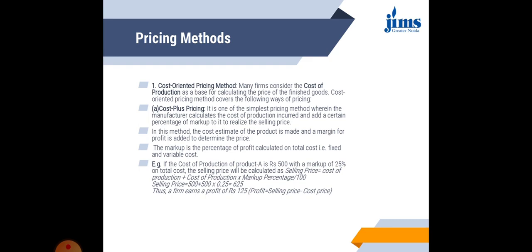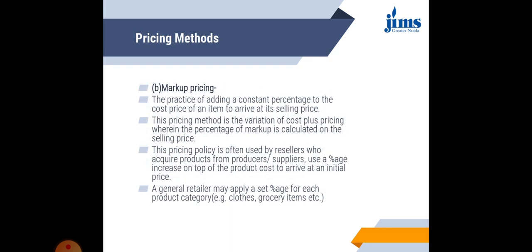For example, if the cost of production for one unit is ₹500, and the organization wants to keep a markup of 25%, the selling price is calculated as: cost of production plus cost of production multiplied by markup percentage divided by 100. So, ₹500 plus ₹125 gives a selling price of ₹625. This is how cost plus pricing is done.